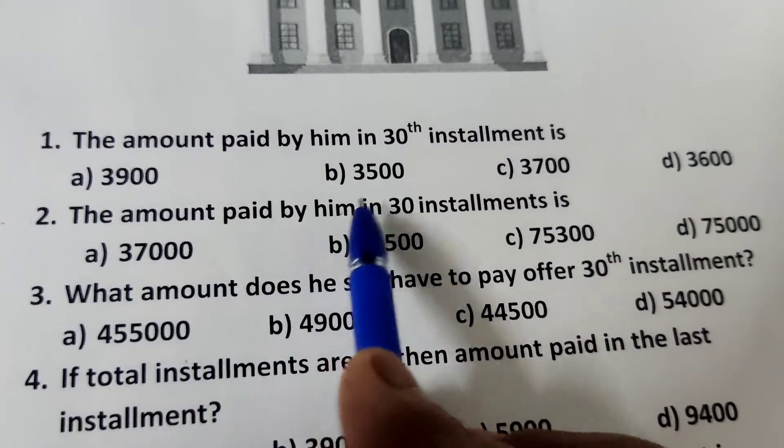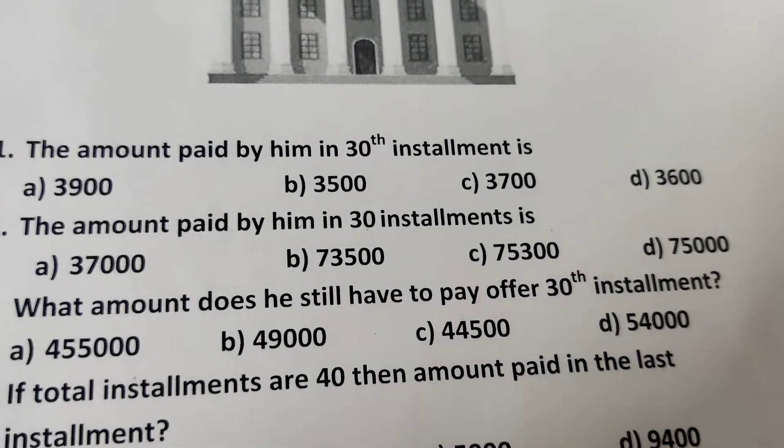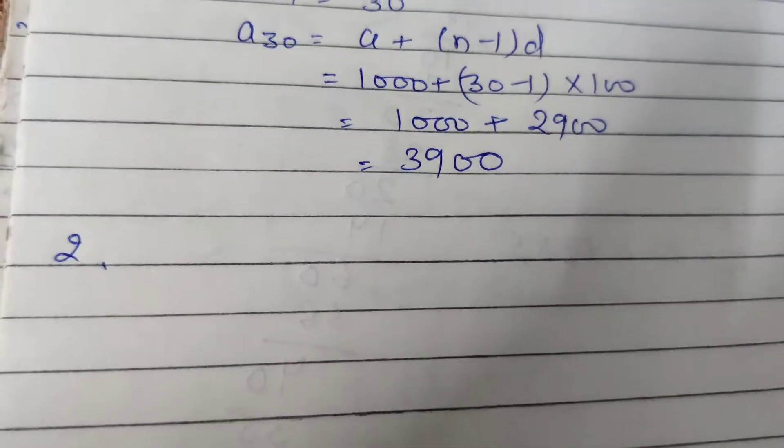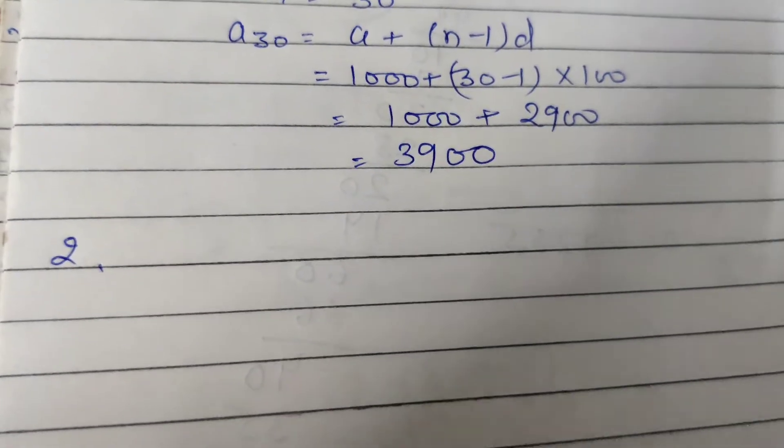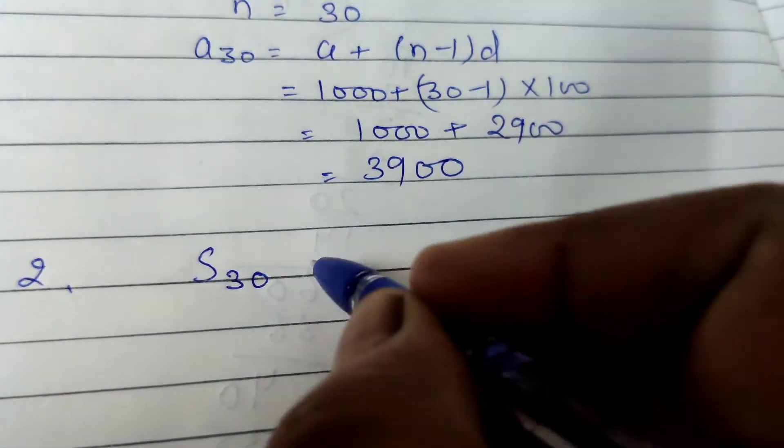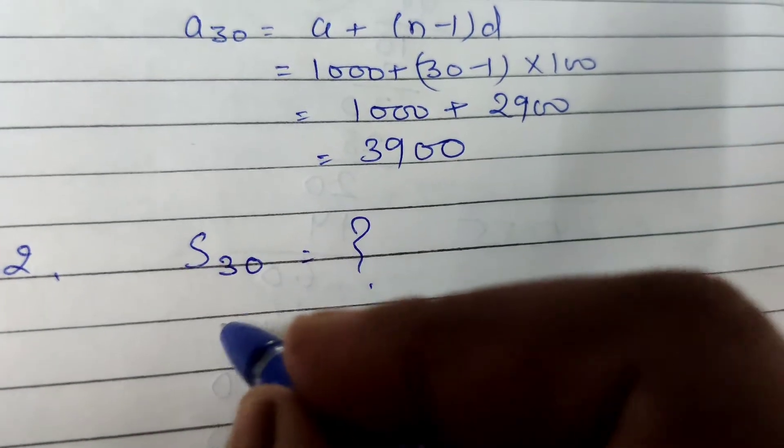Next, the amount paid by him in 30 installments. There are four options. The amount paid by him in all 30 installments. S30. We have to find the S30, sum of 30 installments.